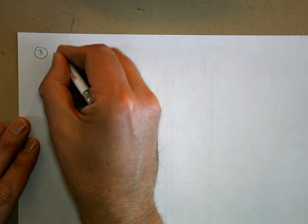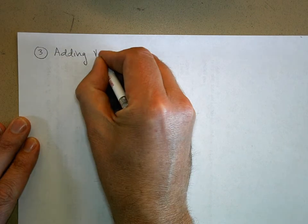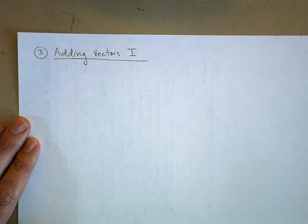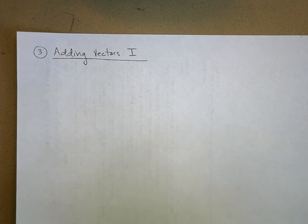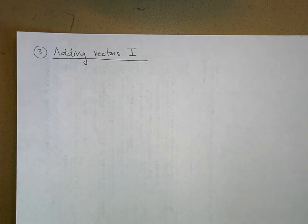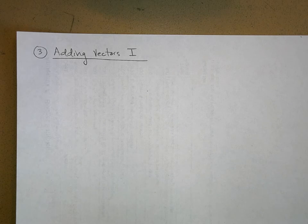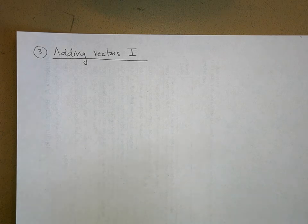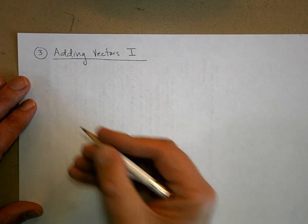Let's do assignment three, which is adding vectors, part one. We're going to learn how to add vector quantities. This is purely math today, but we need to be able to add vectors together in order to do physics problems later on, because a lot of quantities are vectors — things like displacement, position, velocity, acceleration, force, momentum, and electric field.